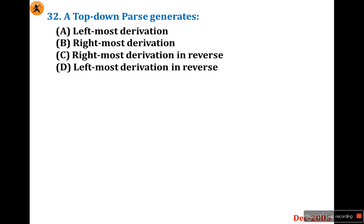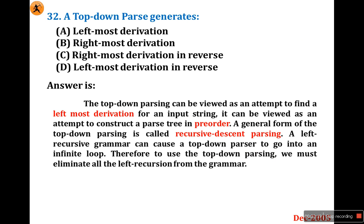Look at the next question: the top-down parser generates — this is a very familiar question asked many times. A top-down parser generates a leftmost derivation. It can be viewed as an attempt to find the leftmost derivation for an input string, and also as an attempt to construct a parse tree in preorder.